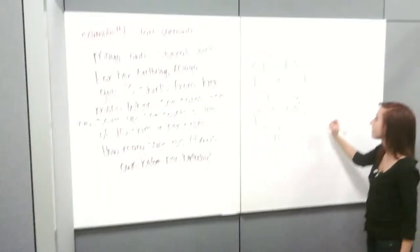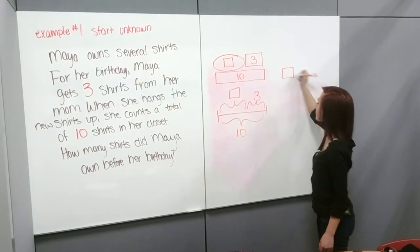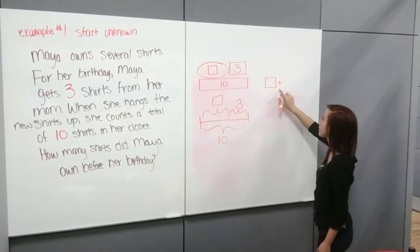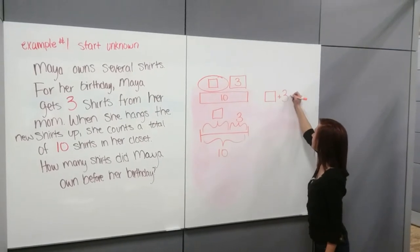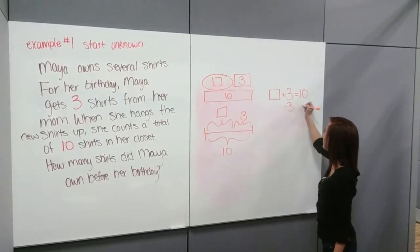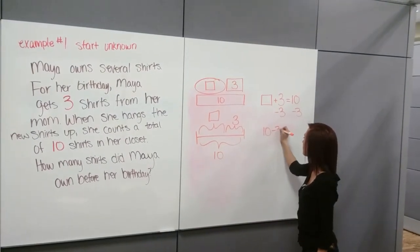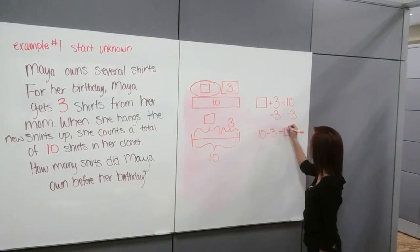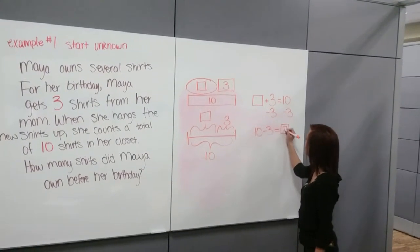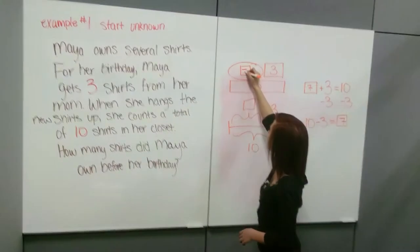If we were going to write out an equation, first we put the number that she started off with, which we don't know, so we'll put a box. And then we put a plus sign because she gets more shirts — she gets three more, so plus three. That is equal to ten because ten is what we end up with at the end. To solve this, we subtract three from both sides, so we end up with ten minus three equals our unknown box. Ten minus three is equal to seven, so we go back and write seven in for all our unknowns.